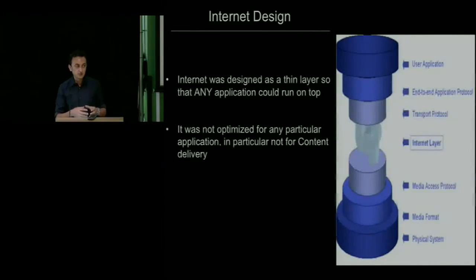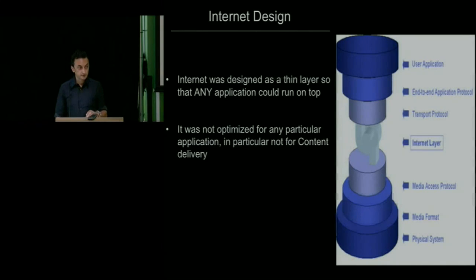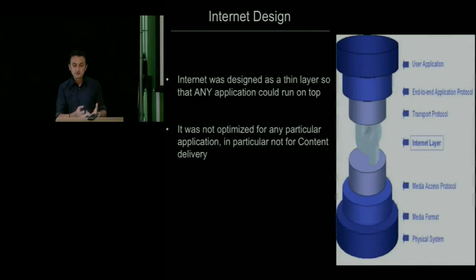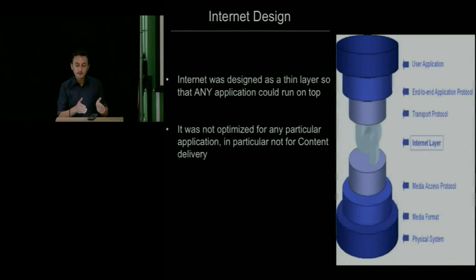If you think about how the internet was designed, it was designed as a very thin layer — on purpose — to allow for a lot of innovation at both the top and bottom layers. But this thin layer was not optimized for any particular application, which meant that for some areas it was not truly doing its best. In particular, for content delivery, the internet has at times been struggling.